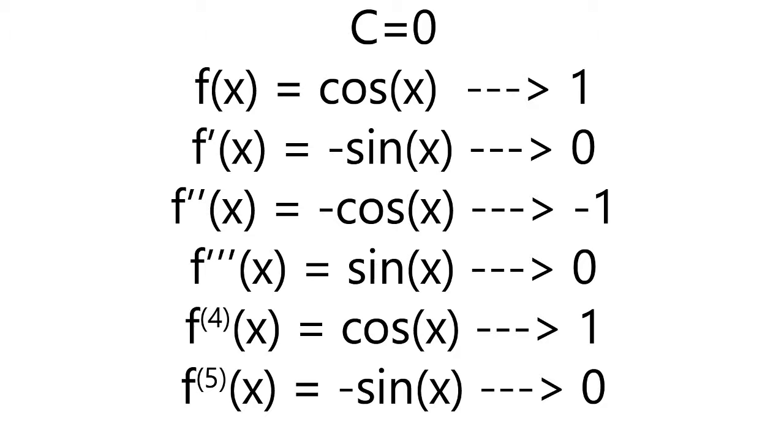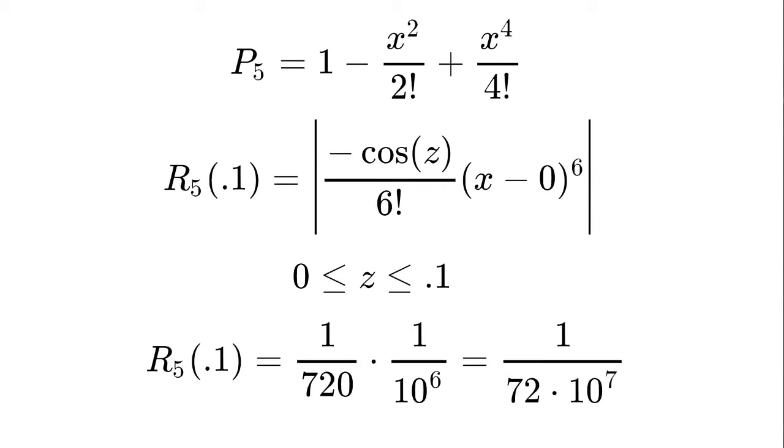So f'(x) = -sin(x), which will equal 0, and we keep going. So all of the cos(x)'s have either a -1 or a 1, and then all the sin(x)'s have a 0. So from this we are going to form the fifth degree Maclaurin polynomial.